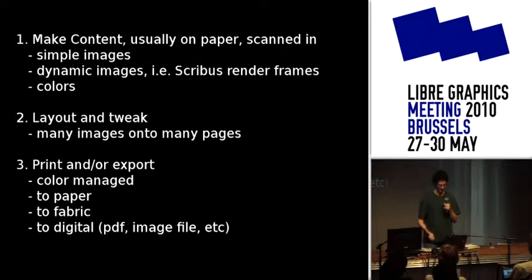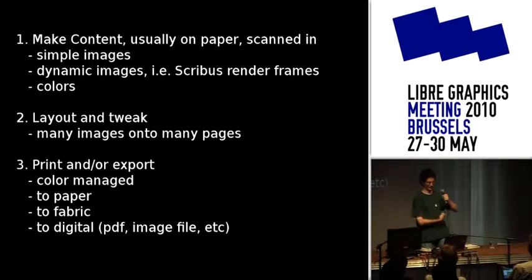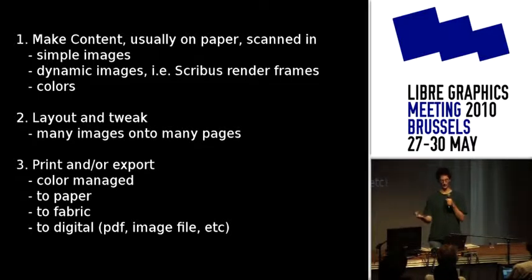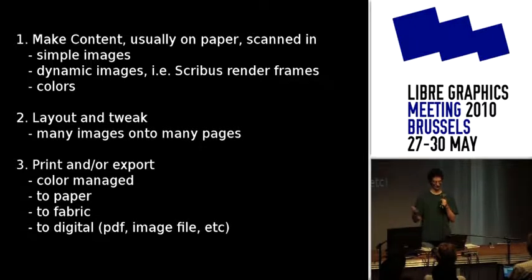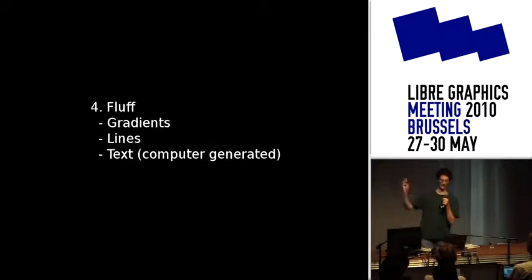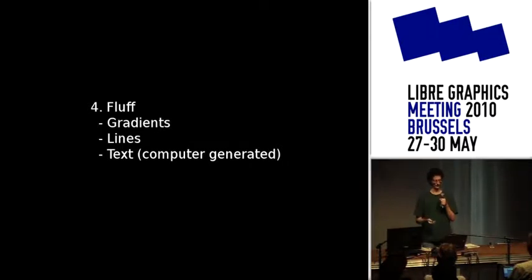Once you have everything laid out, you want to print it to paper or sometimes to fabric — say you have a shirt with strange seams, the fashion angle sounded neat. Something Laidout can do is think about impositions: how do you determine what page goes next to each other? Why stick to books? You can make any polyhedron, any bizarre shape you can imagine. Some people call it packaging — it's arbitrary polyhedral surfaces. There's other stuff you can put in after: gradients, lines, text. I tend to draw all my text, so it hasn't been a priority.